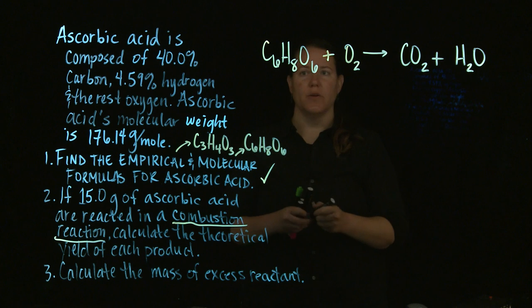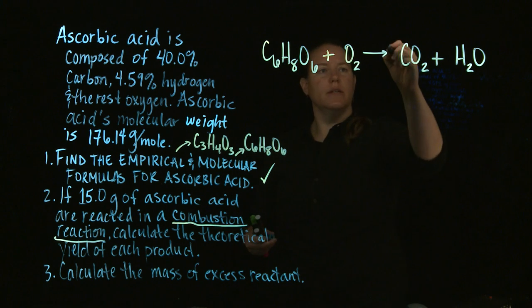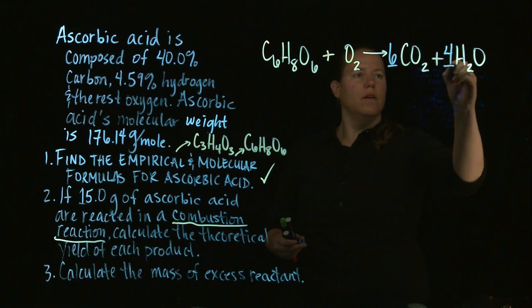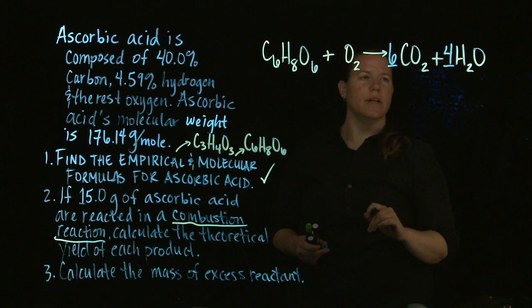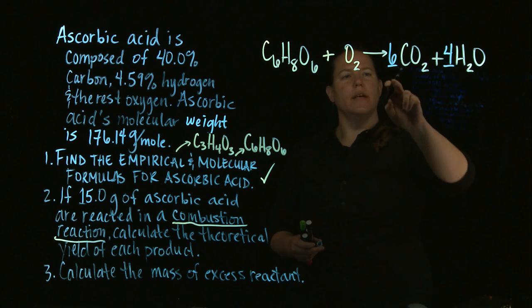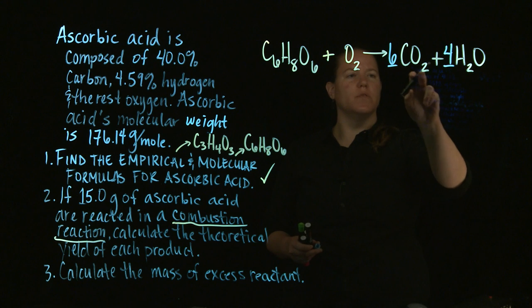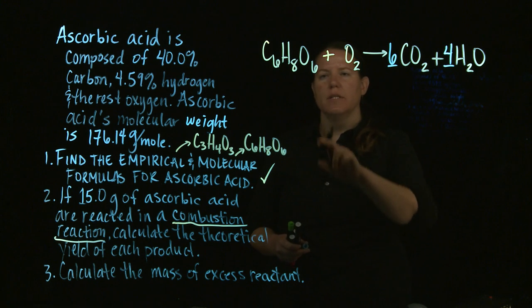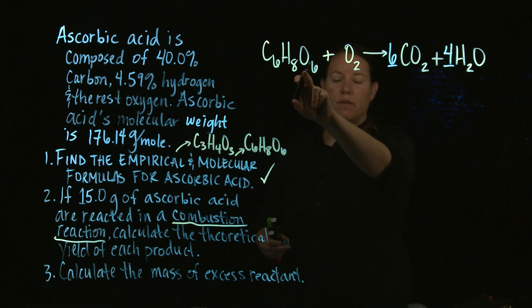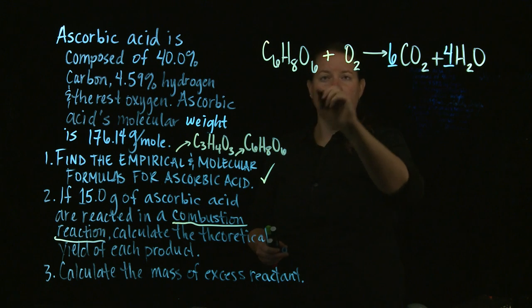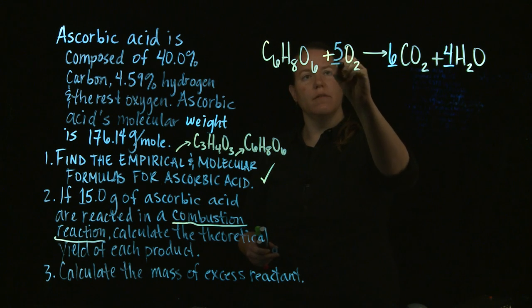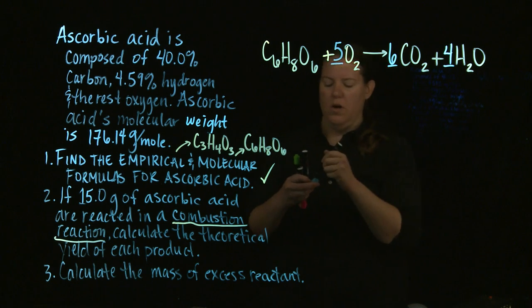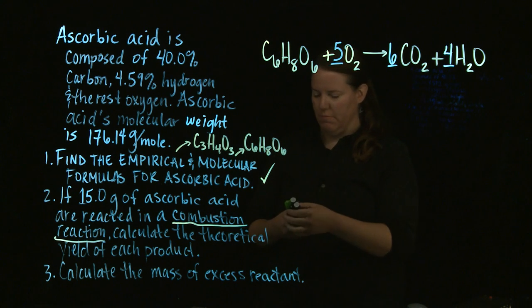Having said that, I now need to balance that. Alright, so I have six C's on this side. That means I better have eight H's on this side as well. So four times two is eight. And now I need to count the total number of O's. I have twelve O's from CO2 and four O's from H2O, which makes sixteen O's. Six of those O's are taken up by this lovely ascorbic acid. So sixteen minus six is ten, which means I need five times two right there. Balanced chemical equation. First thing that I got to do.